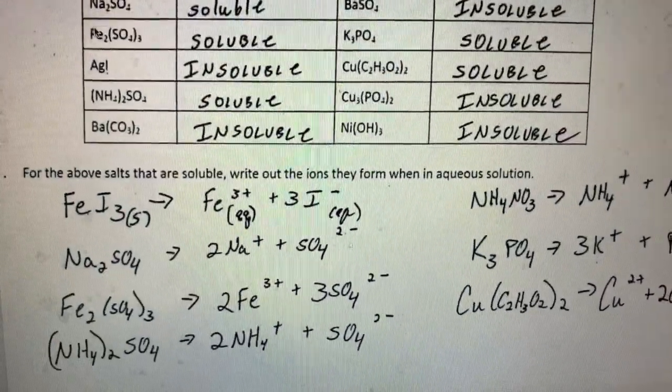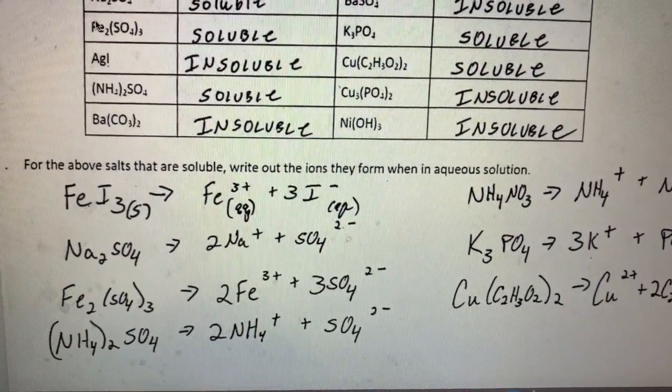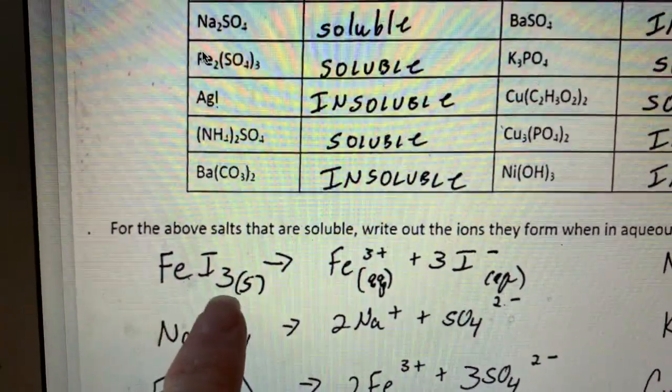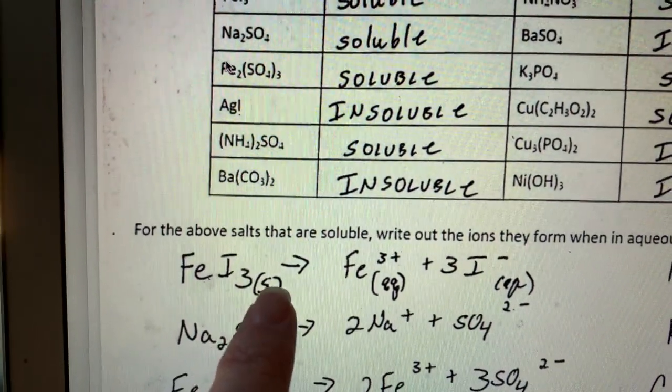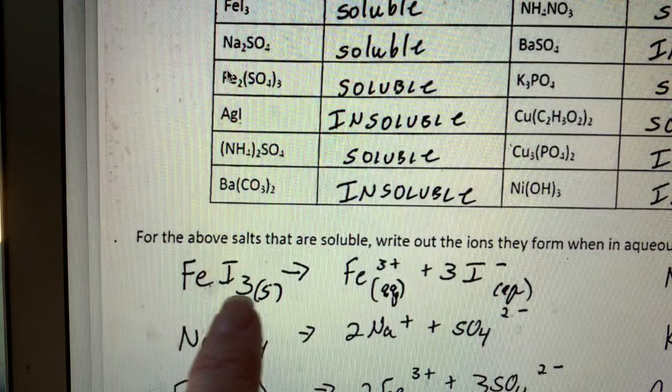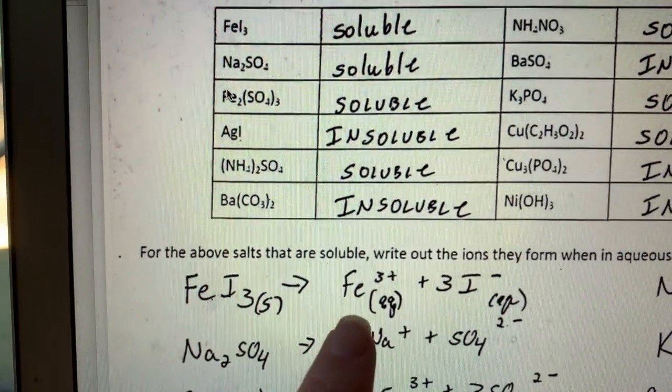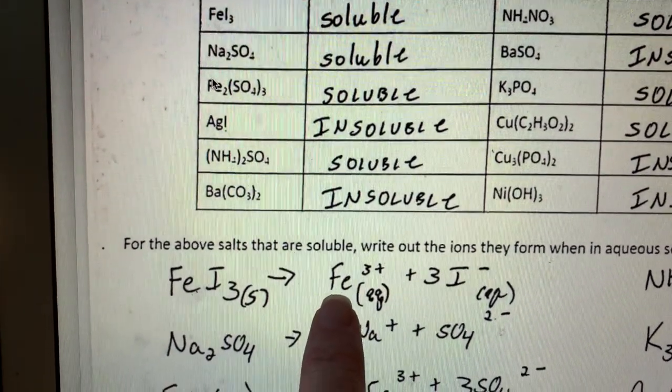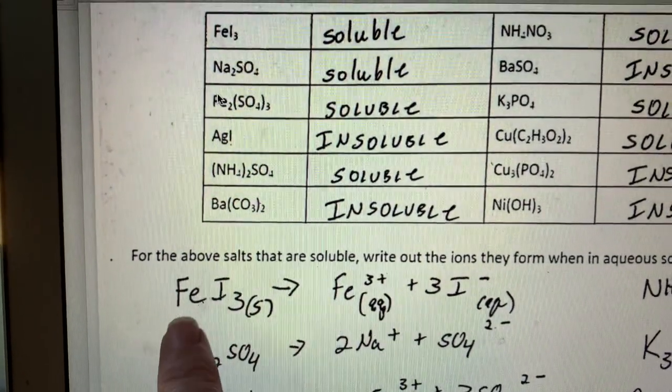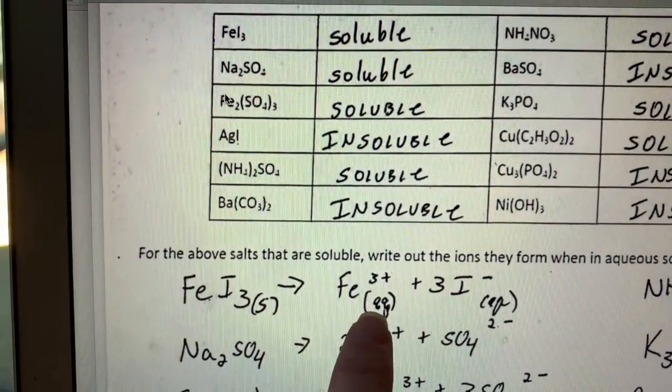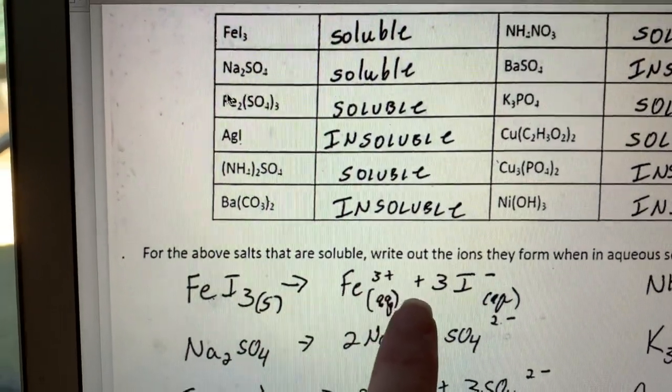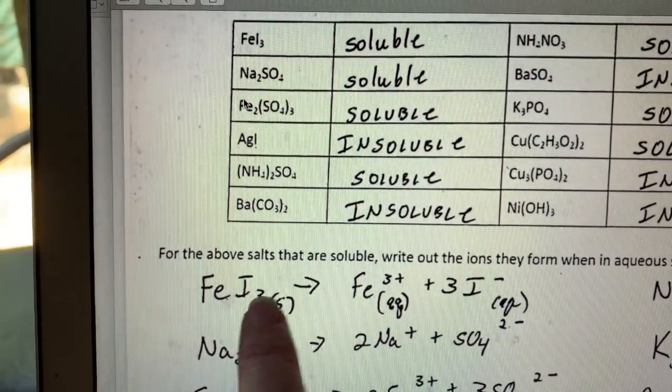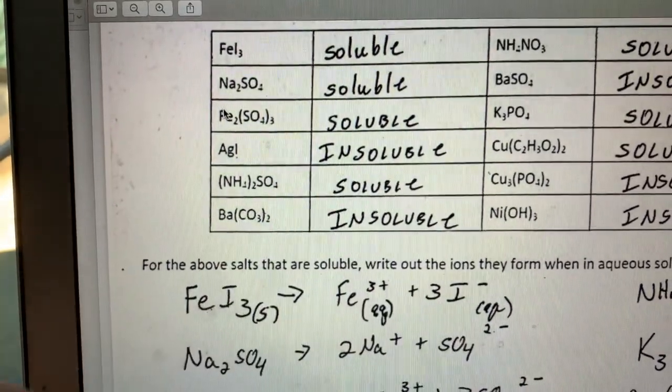The second portion asked, for the above salts that are soluble, write out the ions they form in aqueous solution. Let's look at this first one. I have iron(III) iodide which is a solid, then I'm going to dissolve it. When I dissolve it, because I determined this is a soluble compound, it turns into Fe³⁺ aqueous and three iodide ions because the original solid had three iodides.